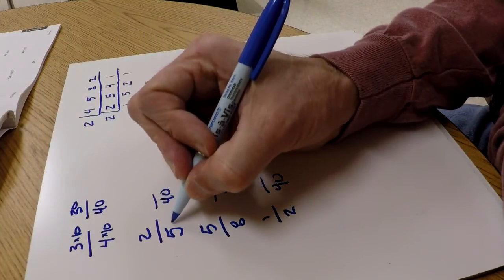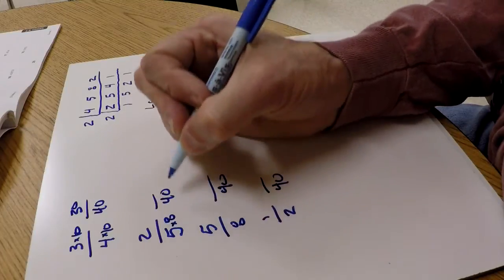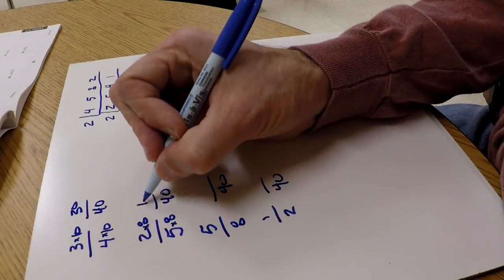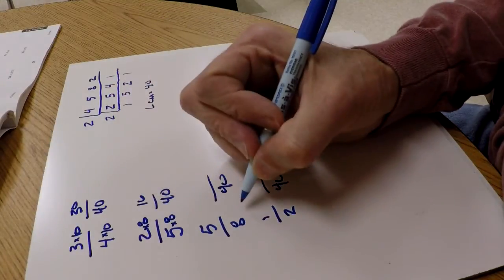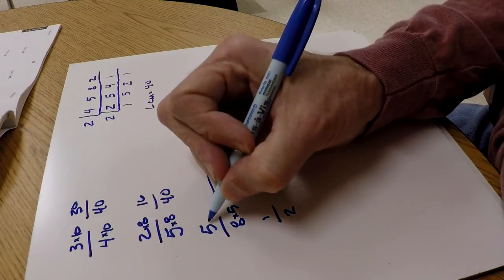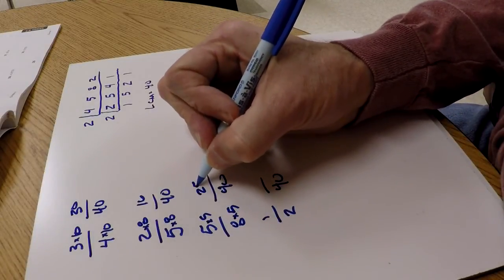How did this 5 get to 40? It multiplied by 8. Whatever I do to the bottom, do to the top. 2 times 8 is 16. How did that 8 get to 40? It multiplied by 5. Do the same to the top. 5 times 5 is 25.